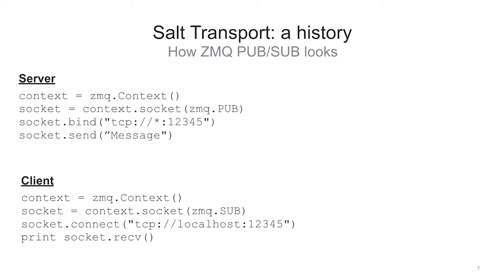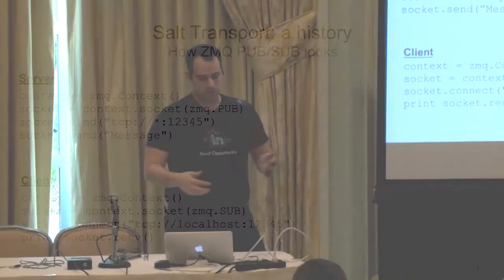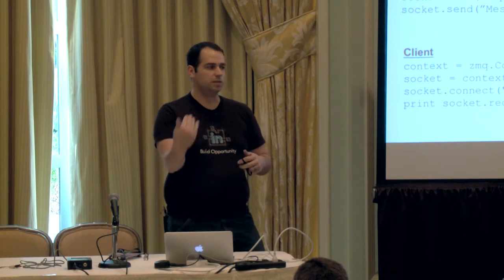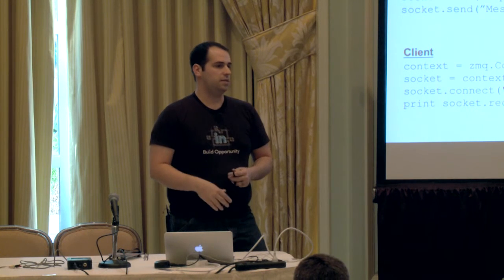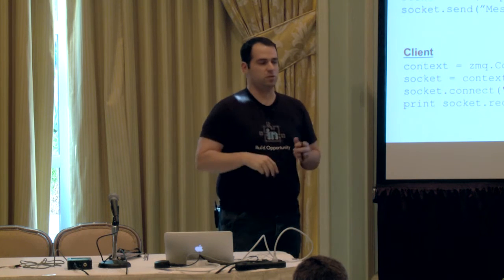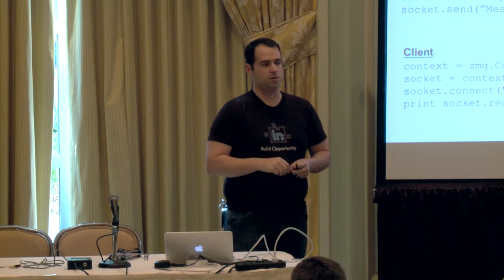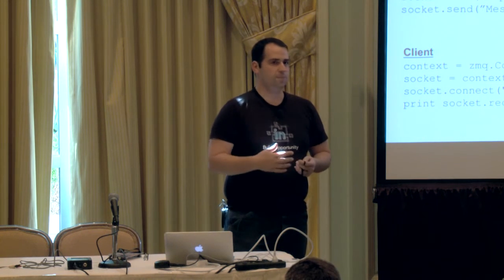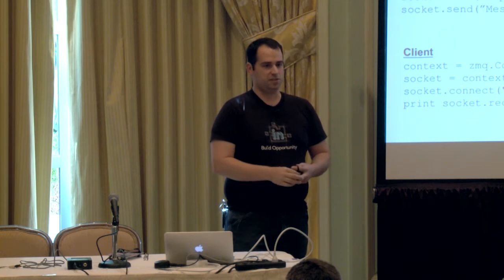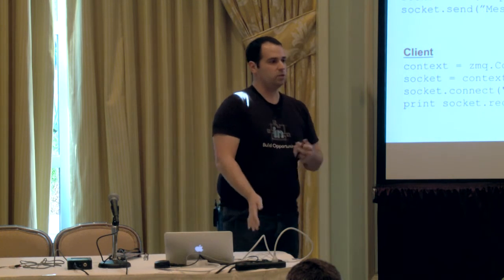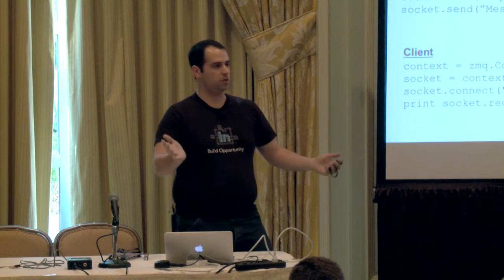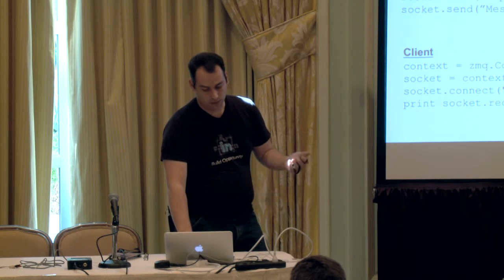For a pub-sub sort of thing, it's just four lines to get a publisher going and four lines to get a client going. You have these contexts in 0MQ, you create sockets against those contexts, and the sockets are an interface into a specific messaging paradigm. In the pub-sub world, when you do a send, it publishes to all the things. Pub-sub, easiest thing, four lines.